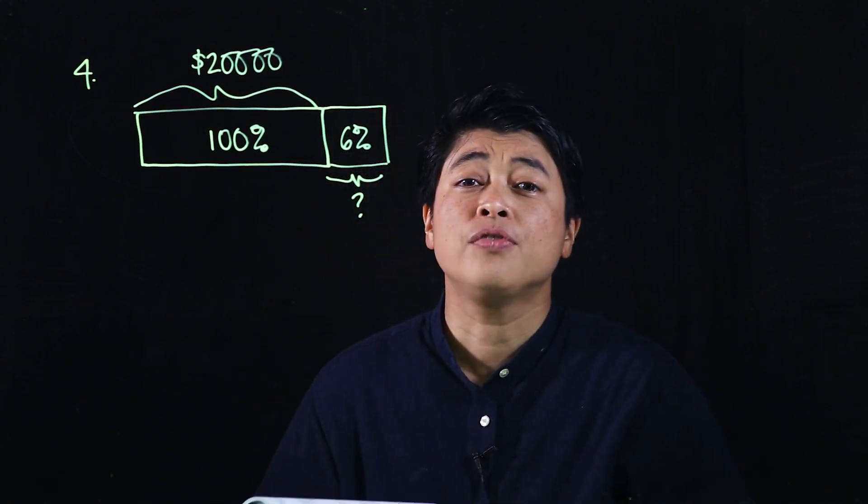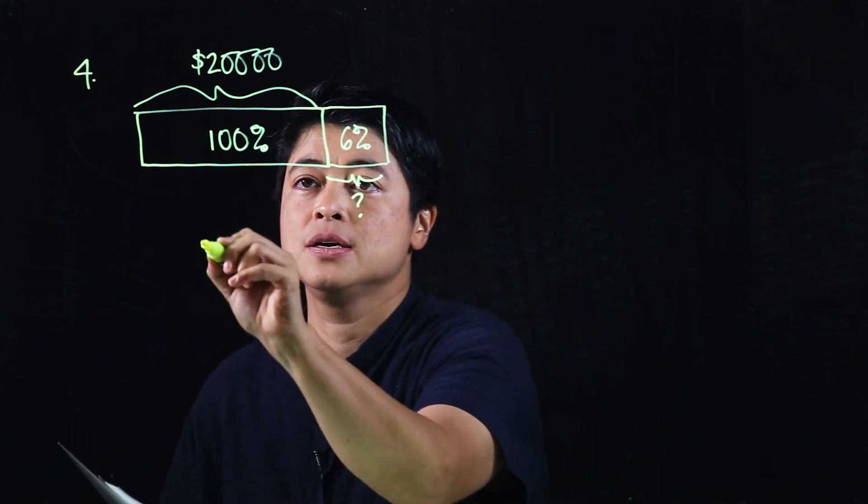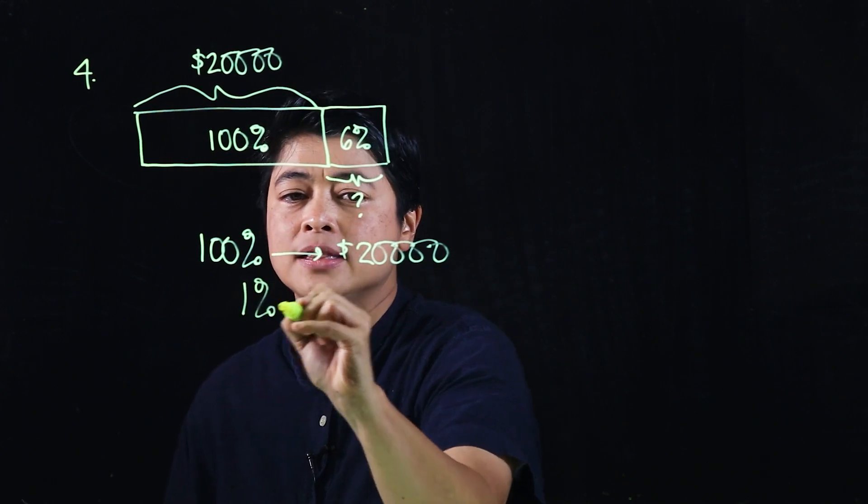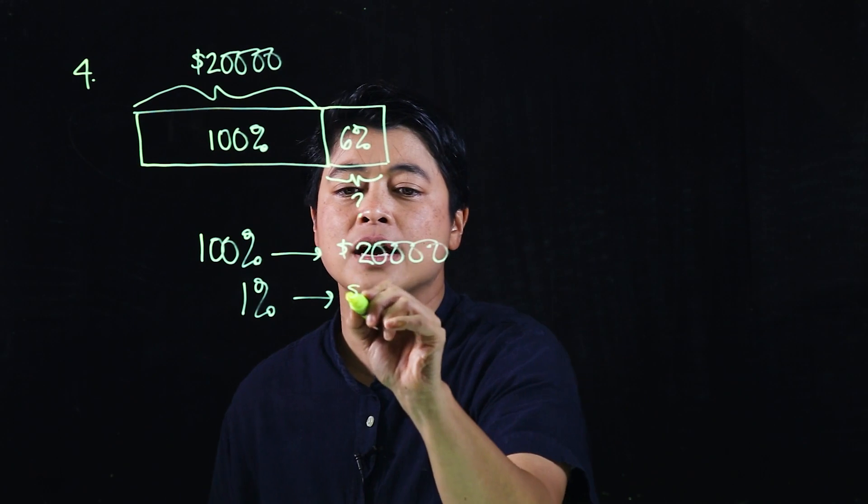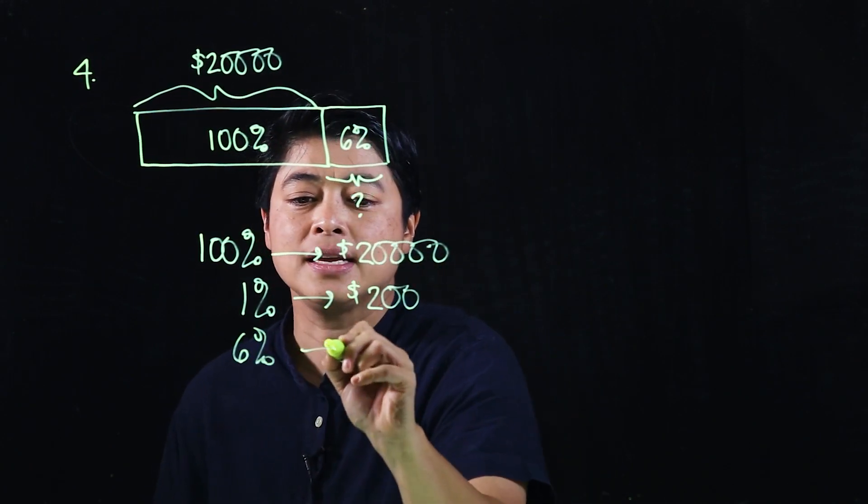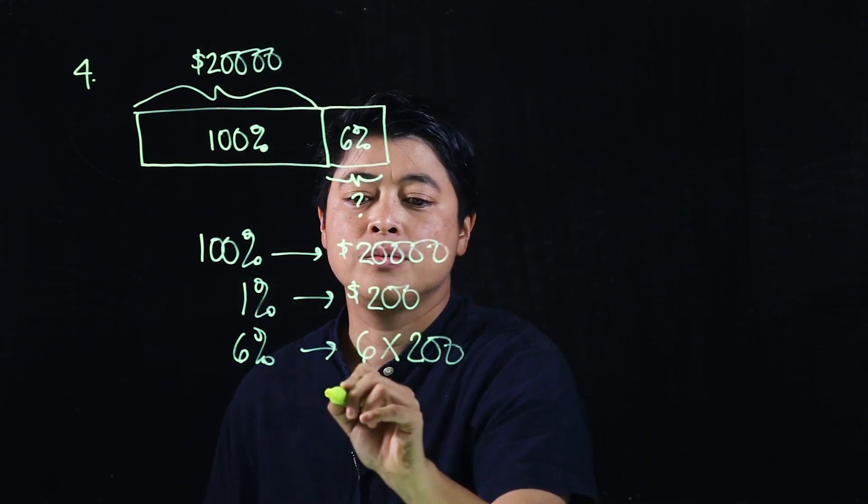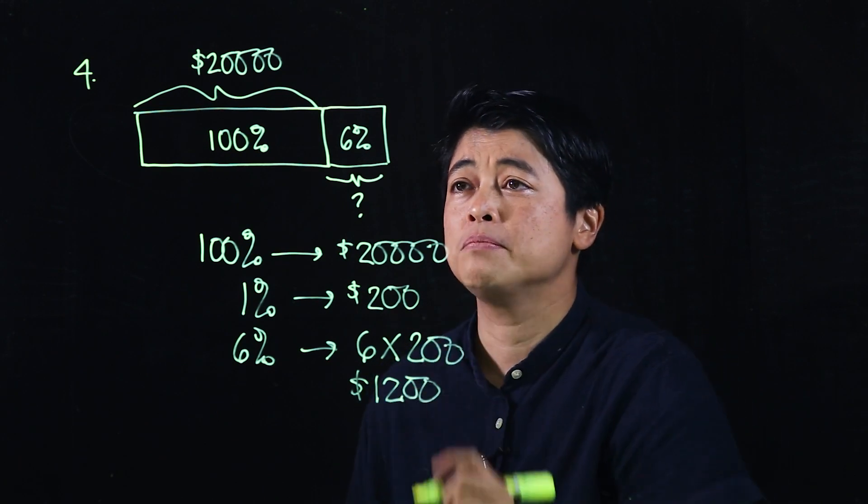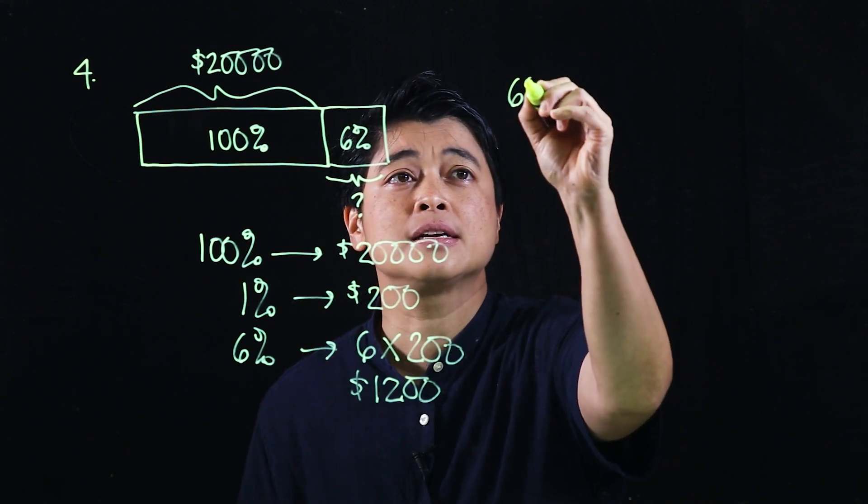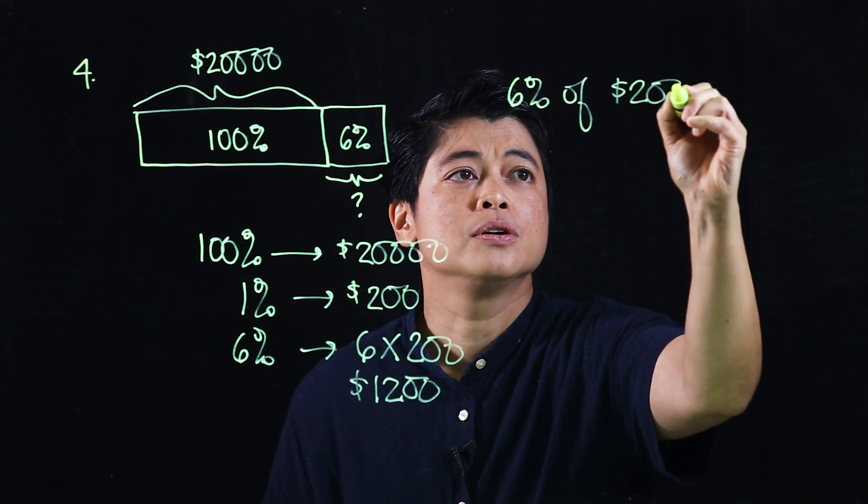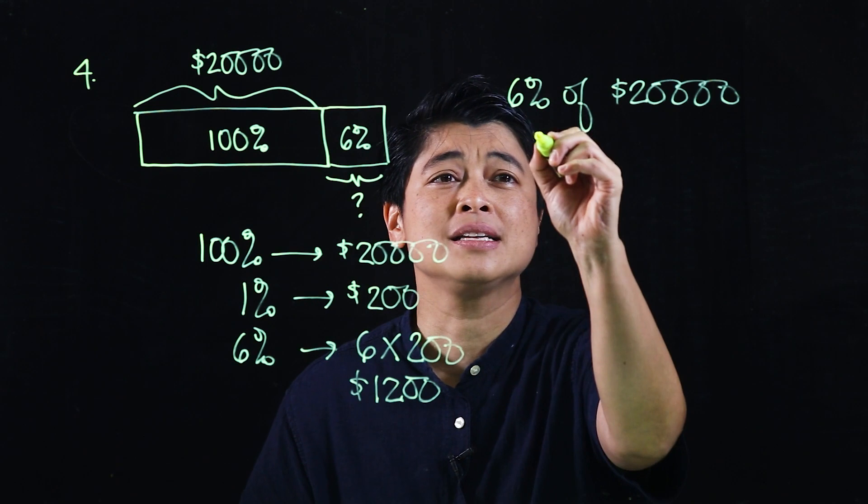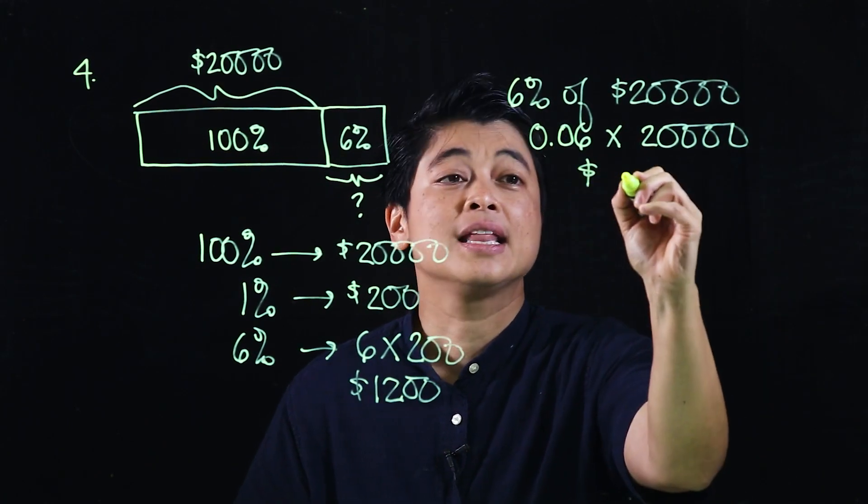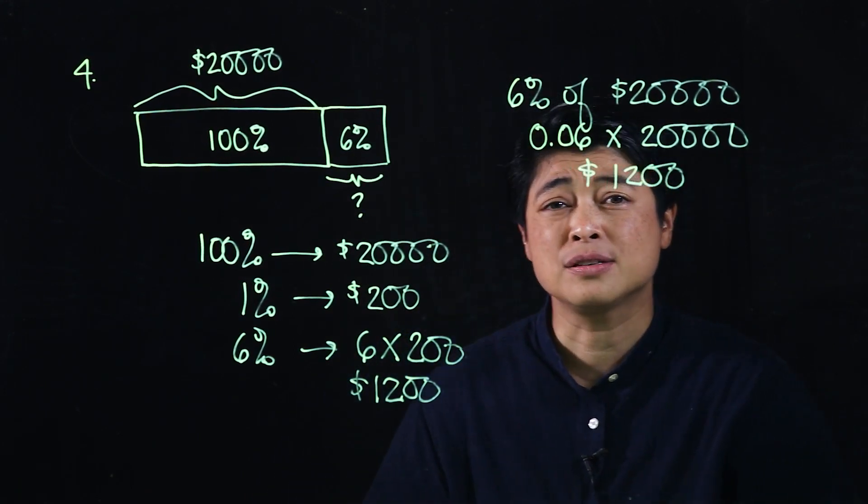So again, if we follow the book approach, the book approach says 100% is $20,000. Then 1% is, so that means I can cancel the zeros. That will be 200. Which means 6% is 6 times 200. Which means that's a total of $1,200 that was paid to the bank as interest. That's the book approach. The other approach is just to take 6% of $20,000. If calculators are allowed, that means that's 0.06 times $20,000.